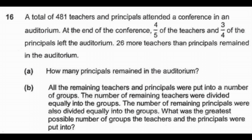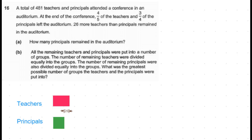Let's start drawing the model for this problem. Let's assume one box is the number of principals remaining in the auditorium. Then the number of teachers remaining becomes one unit plus 26. Since three-fourths of the principals left, one-fourth of the principals are remaining in the auditorium.